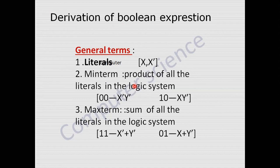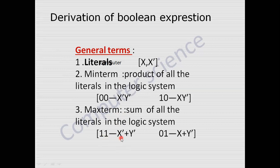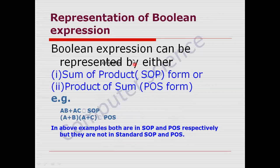The logical system is nothing but the logical expression. In a min term, zero is represented as complement and one is represented as it is. The third one is the max term. The max term is the sum of all the literals in the logical system. In the max term, one is represented as complement and zero is represented as it is. A logical expression can be represented in two forms: sum of product (SOP) and product of sum (POS).